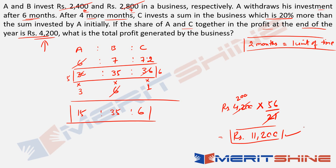It is a fairly simple question. We just had to make sure to optimize it. Instead of writing six months, twelve months, two months separately, using two months as one unit of time makes the numbers smaller and cleaner. The moment you look at six months, ten months, twelve months — think of six months as three units, twelve months as six units, and two months as one unit. That's the best way of doing it. This question came in the exam, and with the right approach it's very manageable.